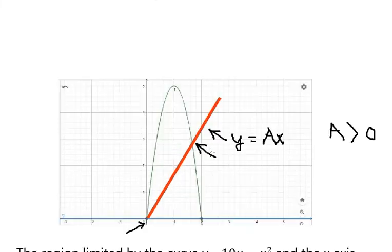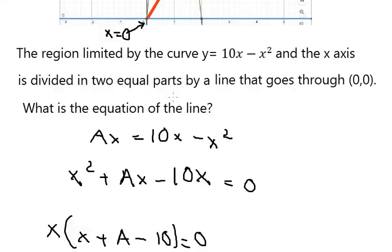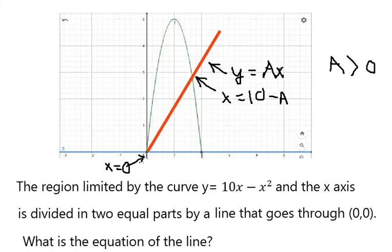So this point here is x equals 10 minus A, and this point here is x equals 0. We know that the red line divides this area into two equal parts, so in this situation we will have two integrals. The first one starts from 0 to 10 minus capital A.